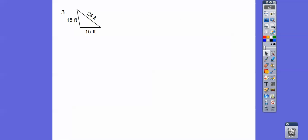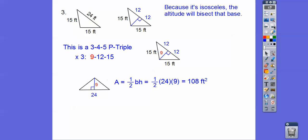So this is an isosceles triangle. When it's an isosceles triangle, if you construct this altitude, it always bisects that base right there. And then what happens is we get another P-triple. This is a 3, 4, 5 P-triple. So if we multiply 3 times 3 is 9, 4 times 3 is 12, 5 times 3 is 15. That tells me that this is going to be 9.